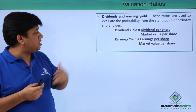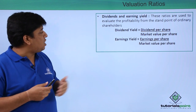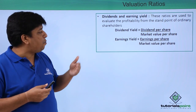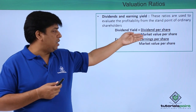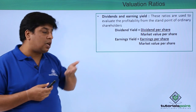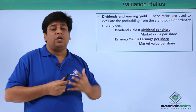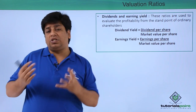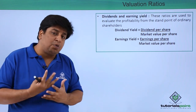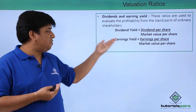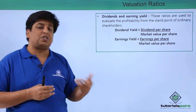The last valuation ratios are dividend yield and earnings yield, used to evaluate profitability from the standpoint of ordinary shareholders. For dividend yield, we take DPS (dividend per share) and divide by the market value per share. Up to now we discussed book value, but here for the first time we use the market value per share — for example, if a share is trading at 1500 or 1700 rupees.